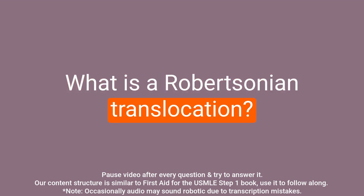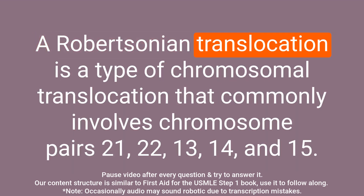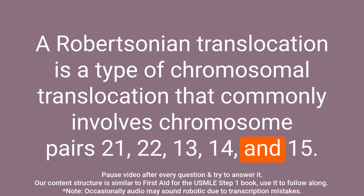Question: What is a Robertsonian translocation? Answer: A Robertsonian translocation is a type of chromosomal translocation that commonly involves chromosome pairs 21, 22, 13, 14, and 15. It occurs when the long arms of two acrocentric chromosomes fuse at the centromere and the two short arms are lost.